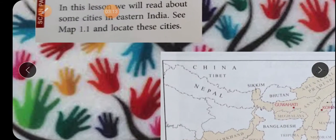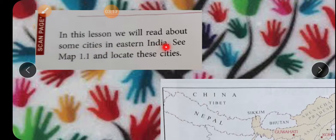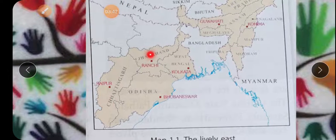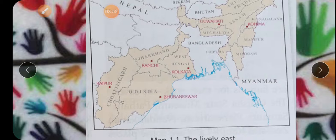In this lesson, we will read about some cities in Eastern India. See Map 1.1 and locate these cities — on the next page you will find Map 1.1, where all East India cities and states are shown, such as Chhattisgarh, Jharkhand, Odisha, West Bengal, Mizoram, Tripura — all 7 sisters. These are the 7 sister states and the capital of each state is given. For example, Chhattisgarh ka capital Raipur hai, Jharkhand ka Ranchi hai, West Bengal ka Kolkata hai, Odisha ka Bhubaneswar hai, and so on.